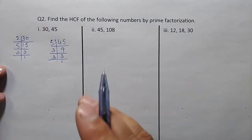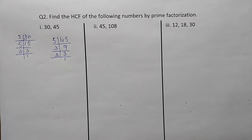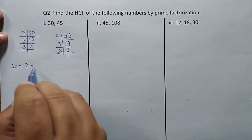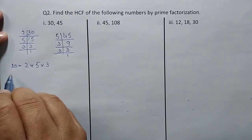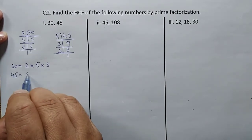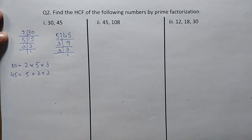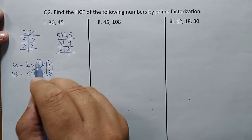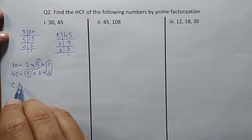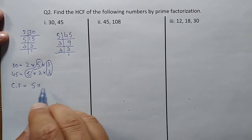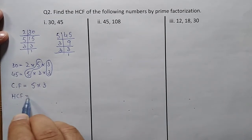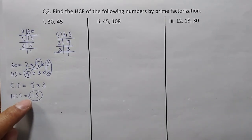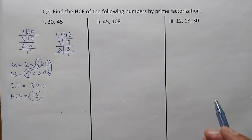Now in prime factorization, we look for the common factors. Common factors are the factors that appear in both numbers. We multiply the common factors together to find the highest common factor. For example, with 15 and 45, we identify the common prime factors shared between them.